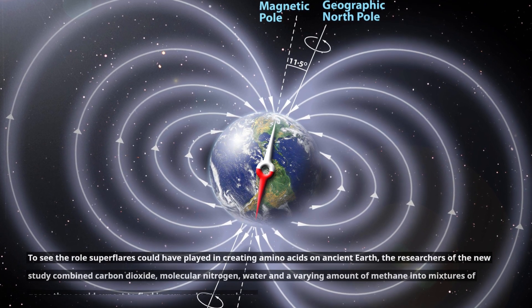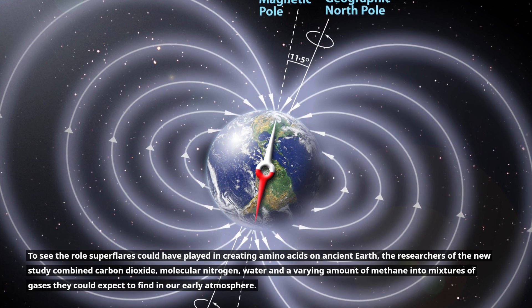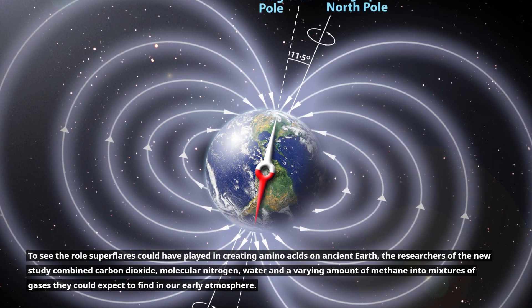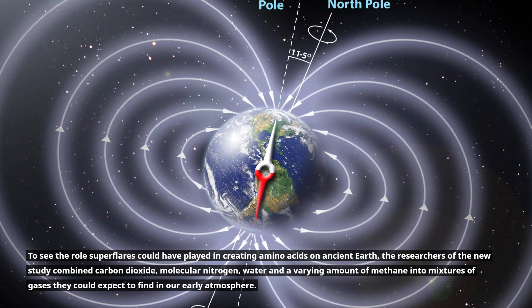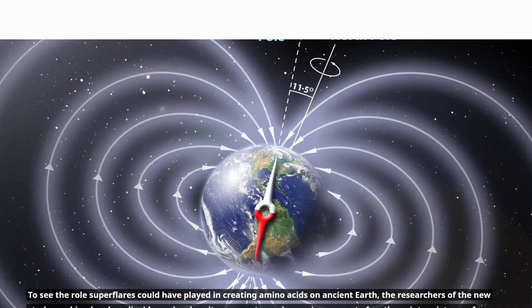To see the role super flares could have played in creating amino acids on ancient Earth, the researchers of the new study combined carbon dioxide, molecular nitrogen, water and a varying amount of methane into mixtures of gases they could expect to find in our early atmosphere.